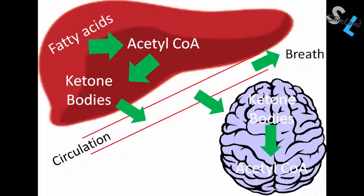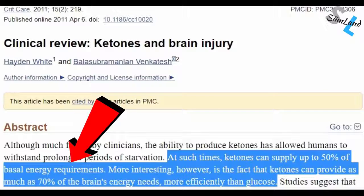Ketone bodies are energy molecules that get created as a byproduct of fatty acid metabolism. With low glycogen stores, the liver ramps up its production of ketone bodies, so they could provide an alternative fuel source to glucose in the brain. After keto adaptation, the brain can meet up to 70-80% of its energy demand with ketones.